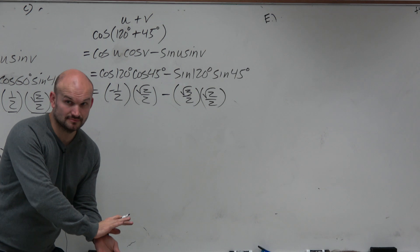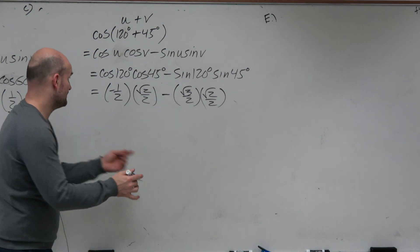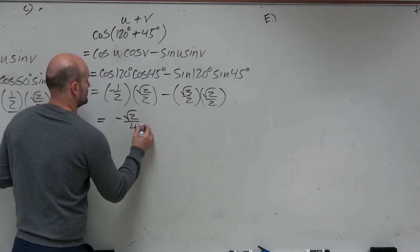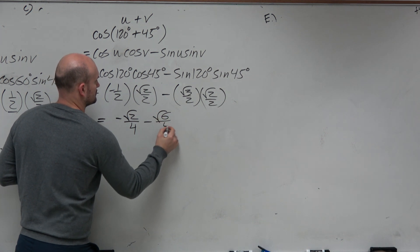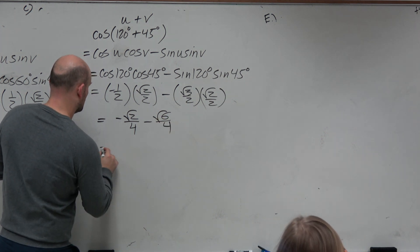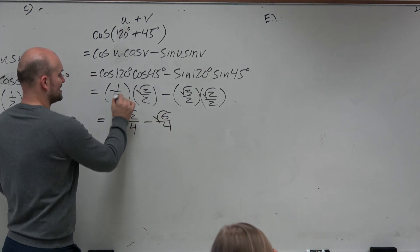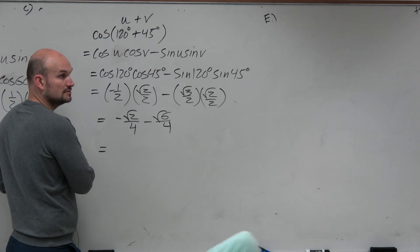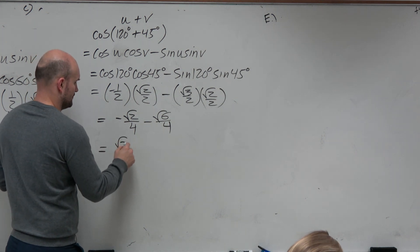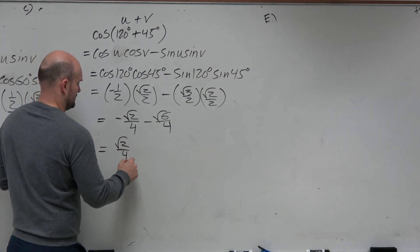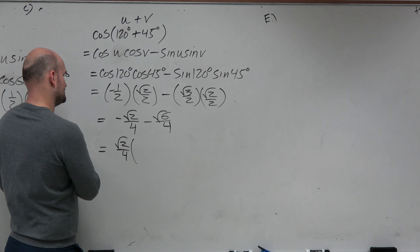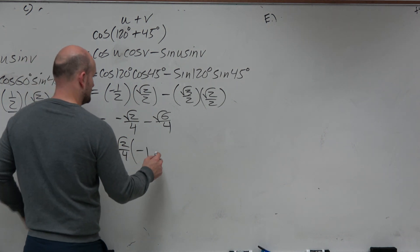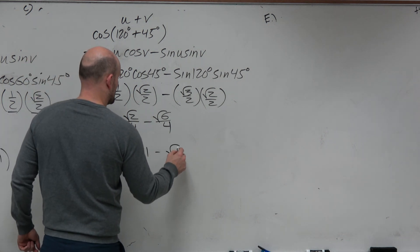Again, could you multiply first and simplify that way? Or could you factor out another square root of 2 over 4? And therefore, that's going to leave me with a negative 1 minus a square root of 3.